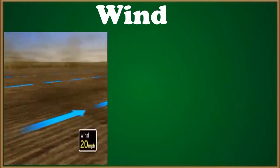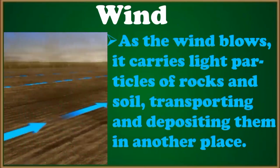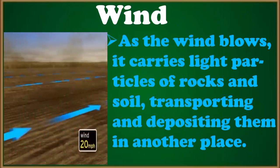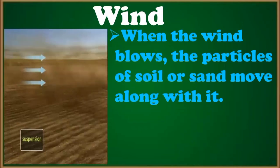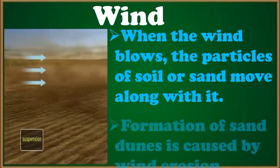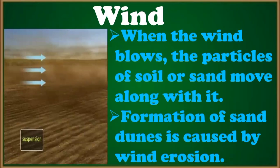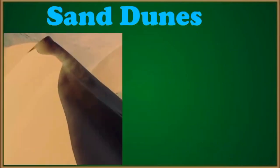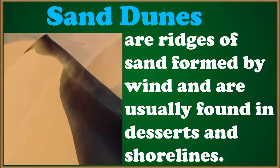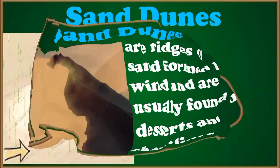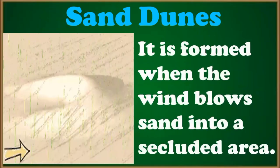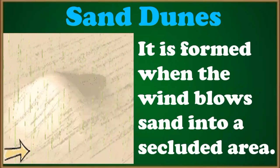The second agent of soil erosion is wind. As the wind blows, it carries light particles of rocks and soil, transporting and depositing them in another place. When the wind blows, the particles of soil or sand move along with it. Formation of sand dunes is caused by the wind. Also, because of wind, deserts were formed. Sand dunes are ridges of sand formed by wind and are usually found in deserts and shorelines. Sand dunes form when the wind blows sand into a secluded area.